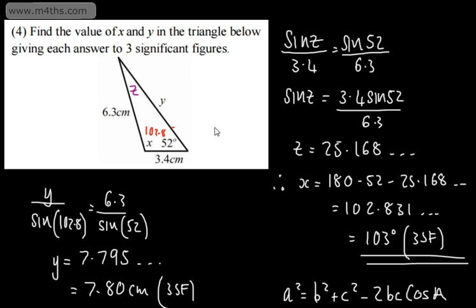So we can either use the sine or the cosine rule on the second part. We've got two unknowns, therefore we're going to need two equations in that particular scenario.